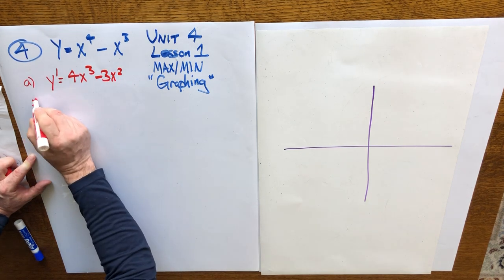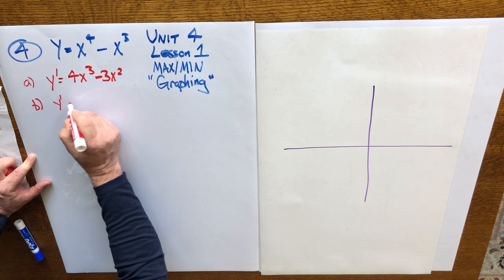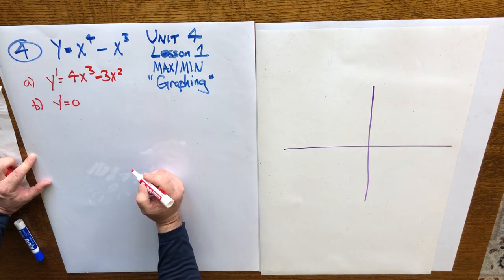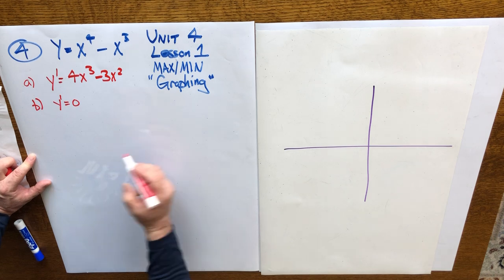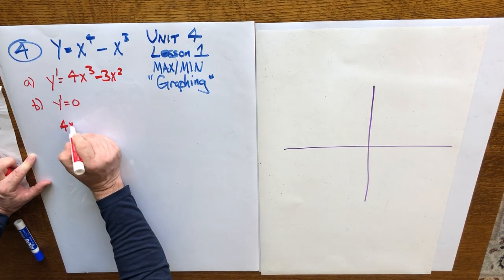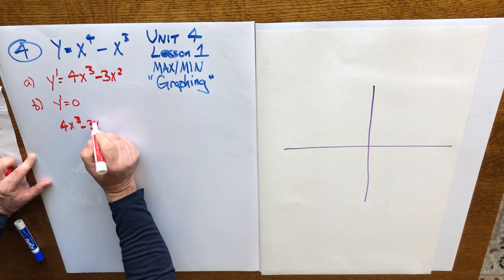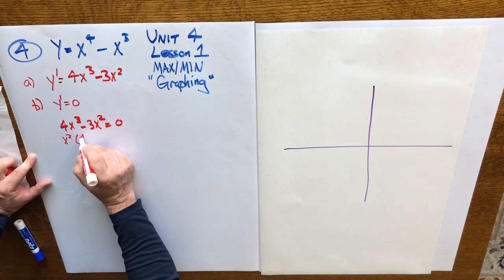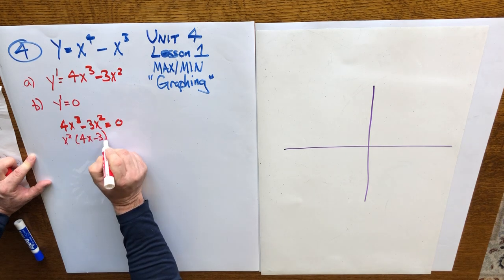The second step, you want to take the derivative and find out where it equals 0, where it will have a horizontal tangent line at the top of a maximum or maybe at the bottom of a minimum. So the derivative, 4x cubed minus 3x squared equals 0. You can factor out an x squared and you're left with 4x minus 3.